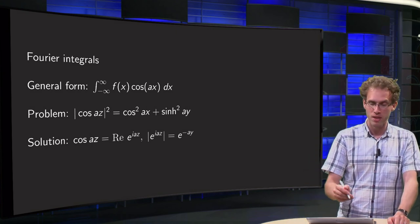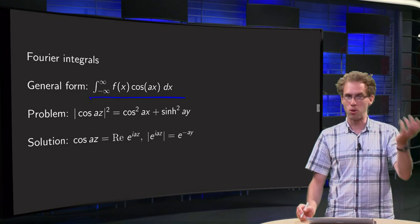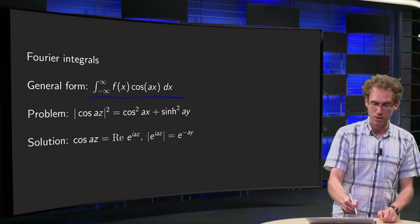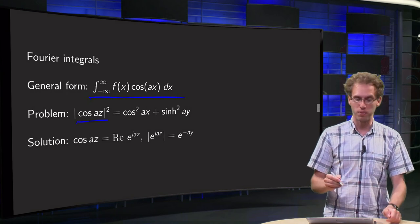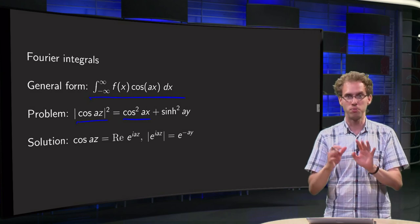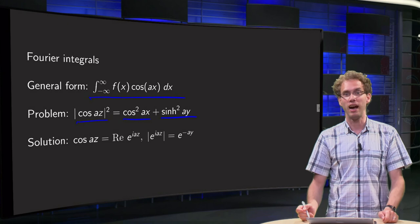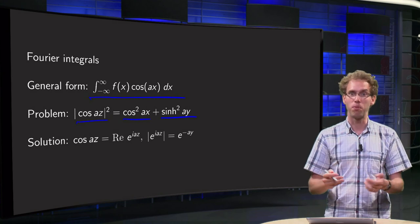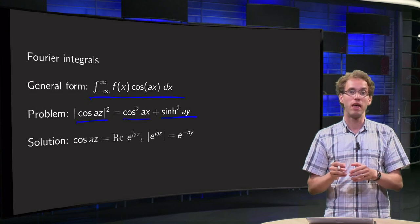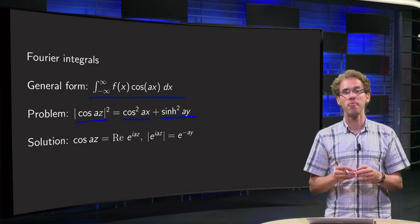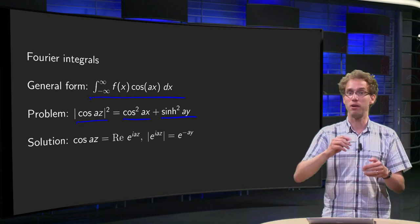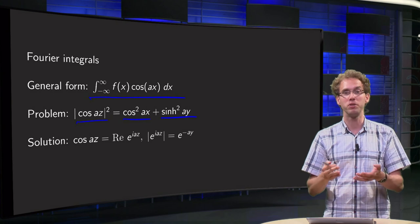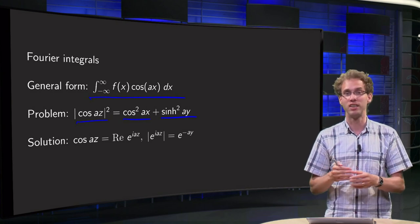In general, you have some integral f(x) times cosine(ax) dx from minus infinity to infinity (or with a sine). The problem is that the norm of cosine(az), if you view it as a complex function, is cosine squared times ax — bounded by 1 — times the sine hyperbolic, and that blows up. So if you include a cosine of az in your contour integral, whether you close in the upper or lower half plane, your function blows up and the integral won't vanish.